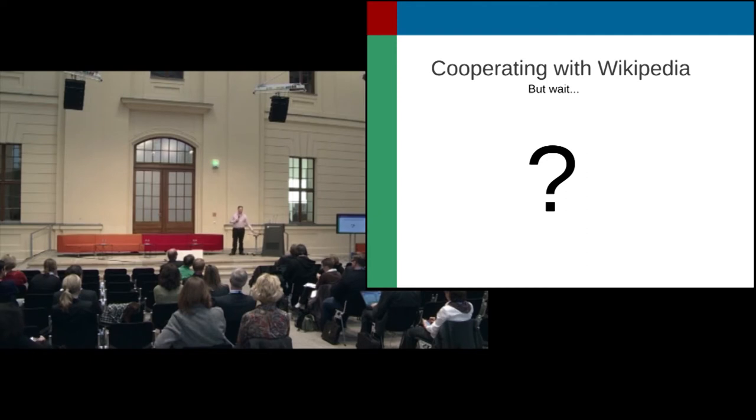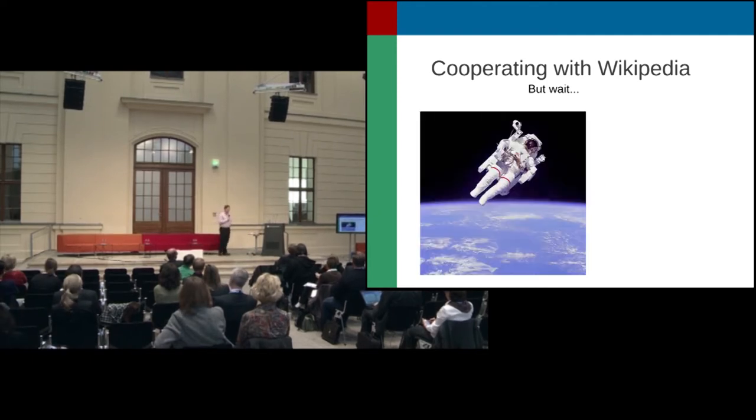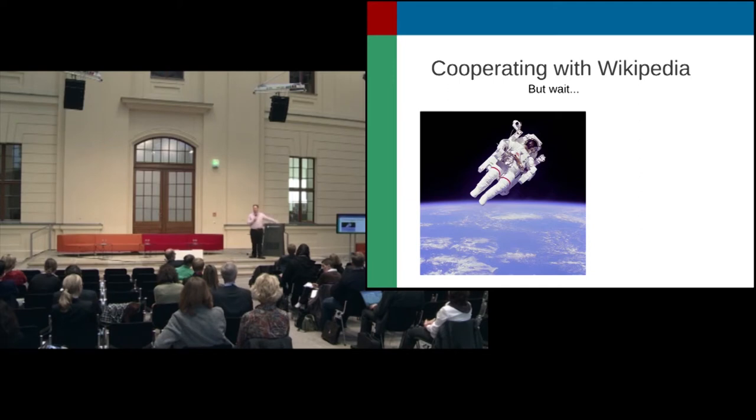Because when it comes to free licenses and free stuff, the question of money always comes up. And when it comes to money, I tend to show this picture. Have you seen this? This is a picture of an astronaut. He's doing an EVA, an extravehicular activity. He's outside in space. And do you know what country he's from? Wild guess. The USA? Yeah.